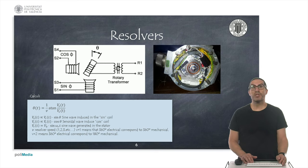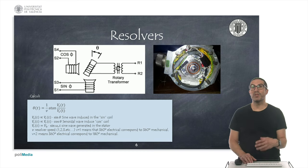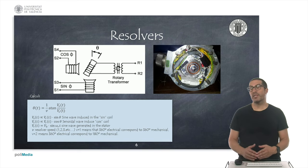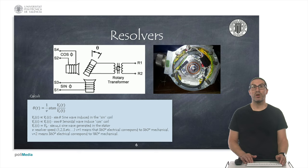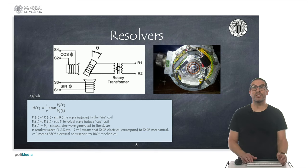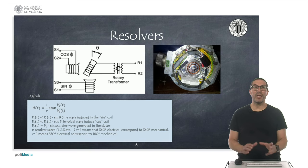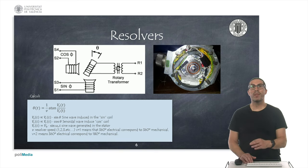Resolvers allow measuring the angular position of an axis by detecting the voltage induced in two coils as a result of a magnetic field attached to the axis. The coils are oriented 90 degrees apart: one measures the cosine of the angle and the other measures the sine of the angle. Therefore, by computing the arc tangent of the measured signals, we can compute the actual axis angle. Some resolvers include gears that allow modifying the velocity ratio, which relates the electrical degrees to the mechanical degrees.